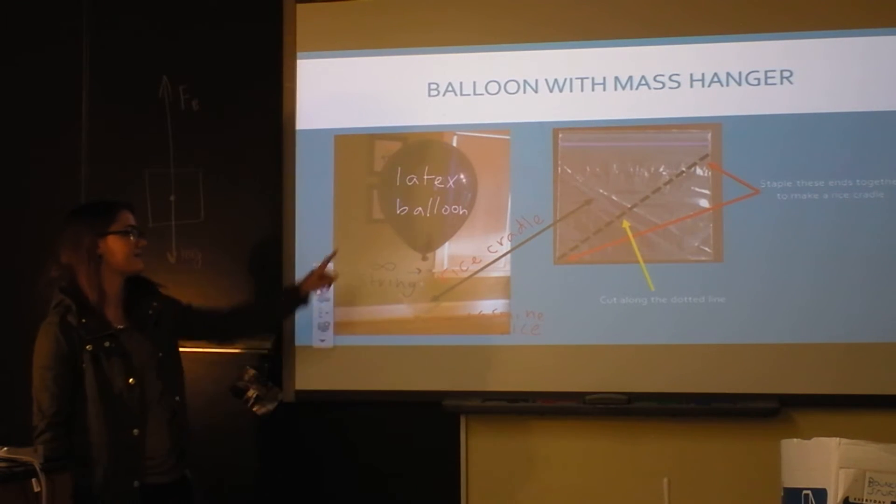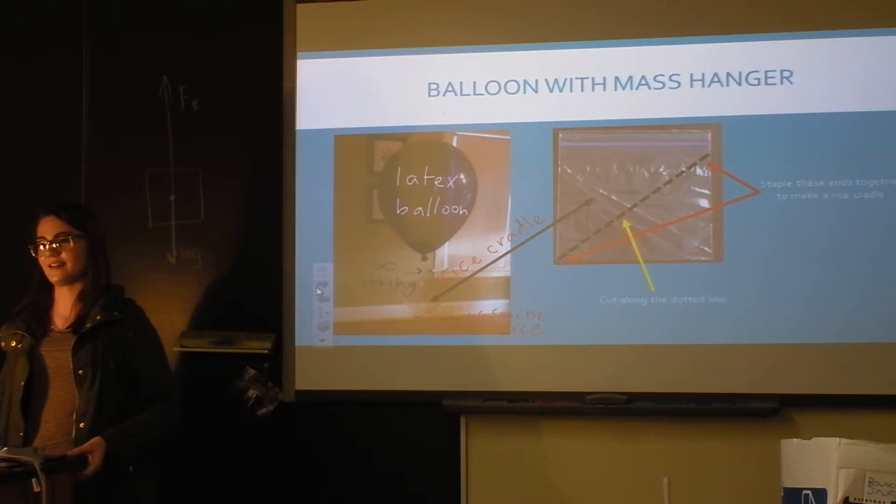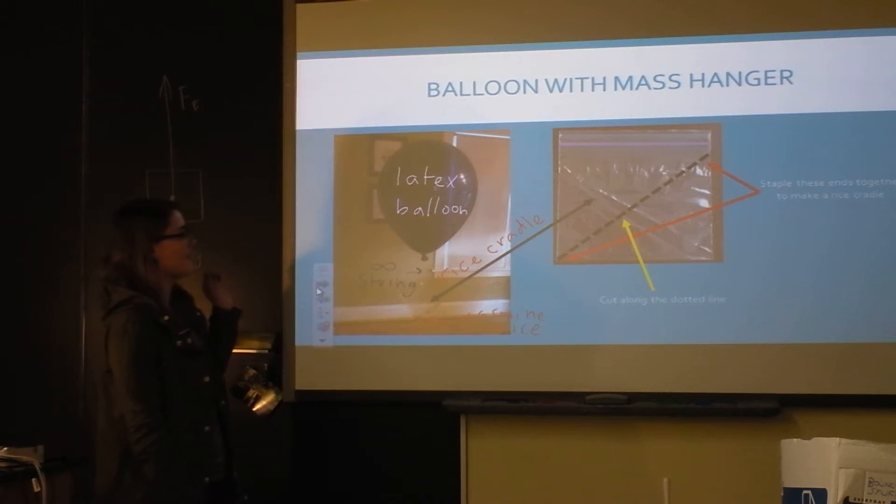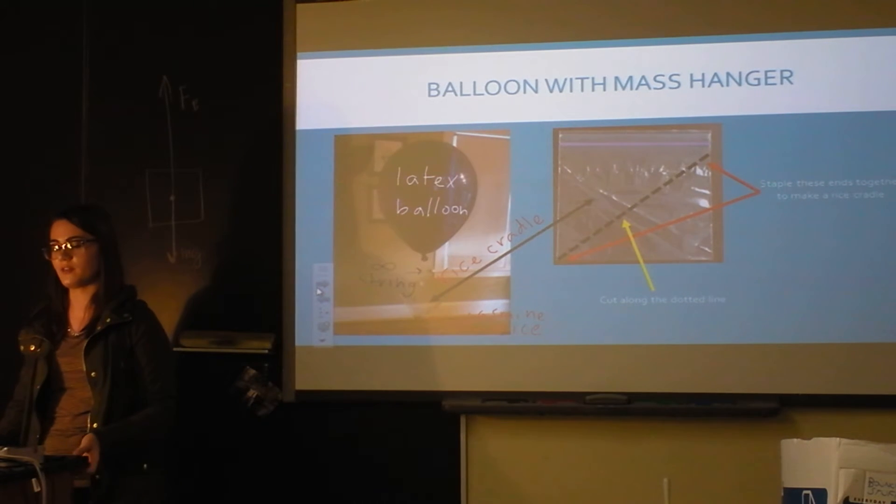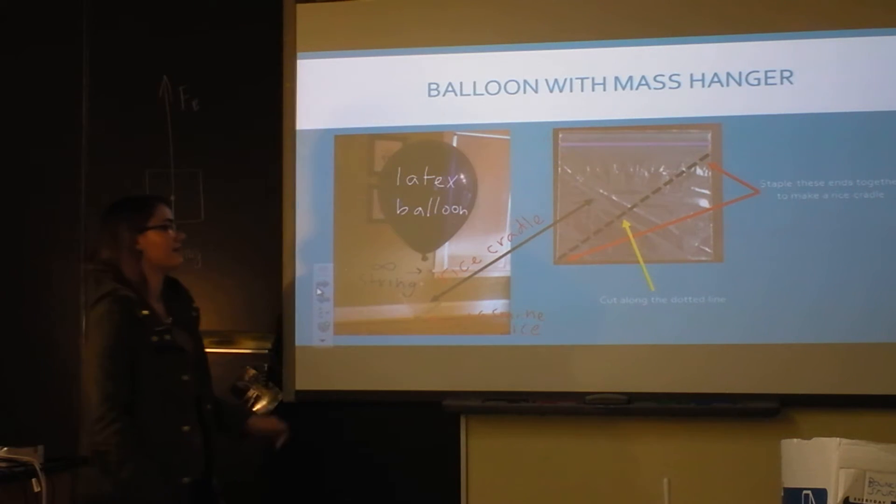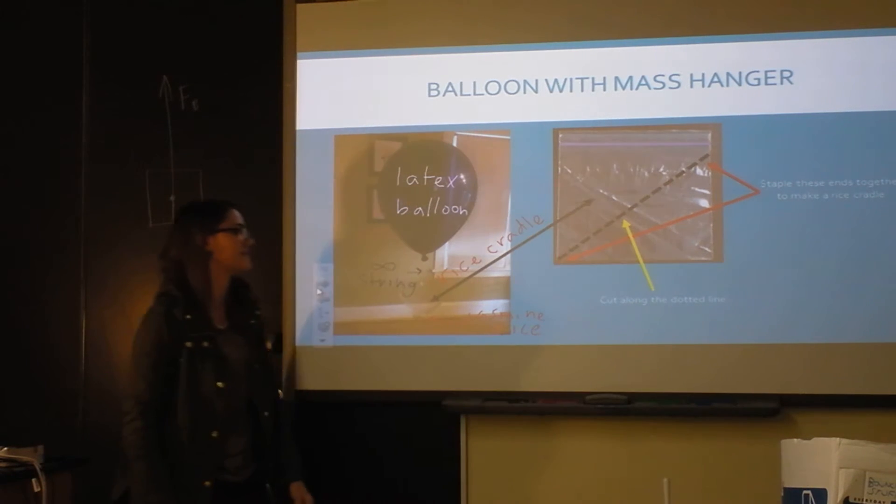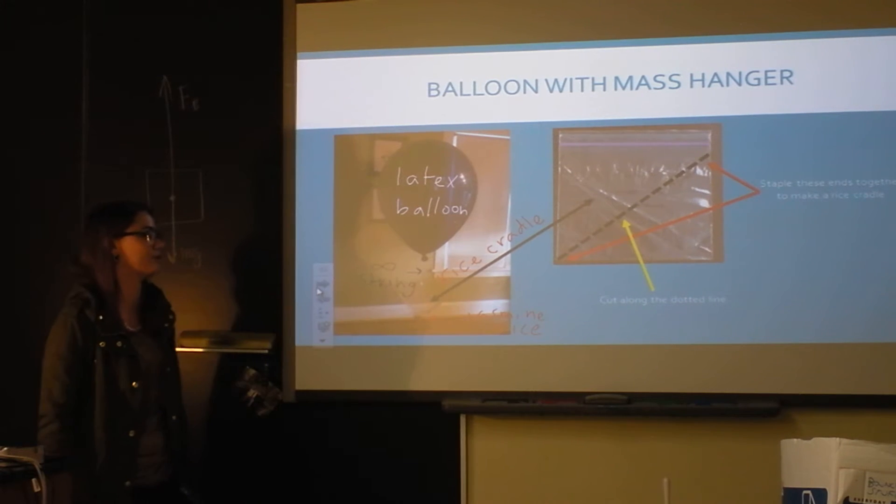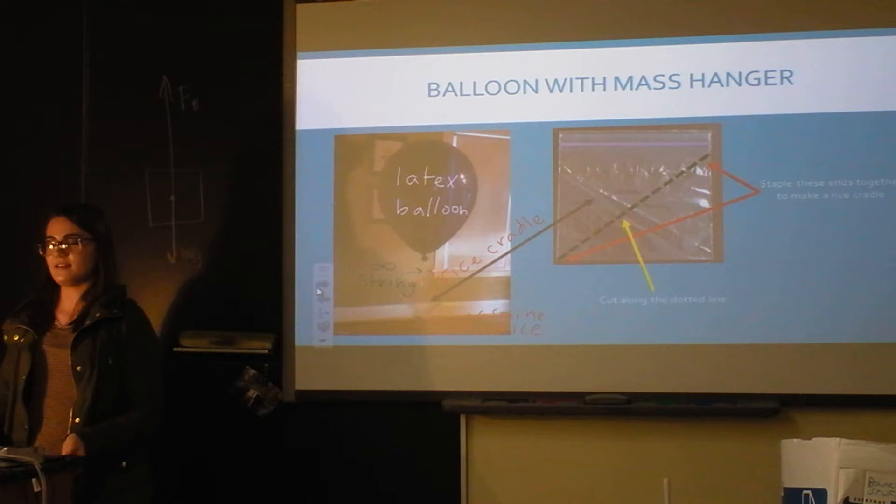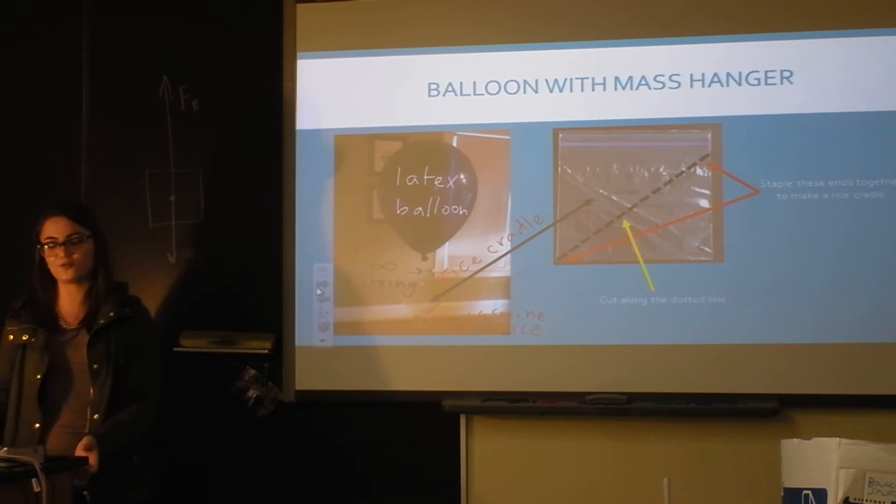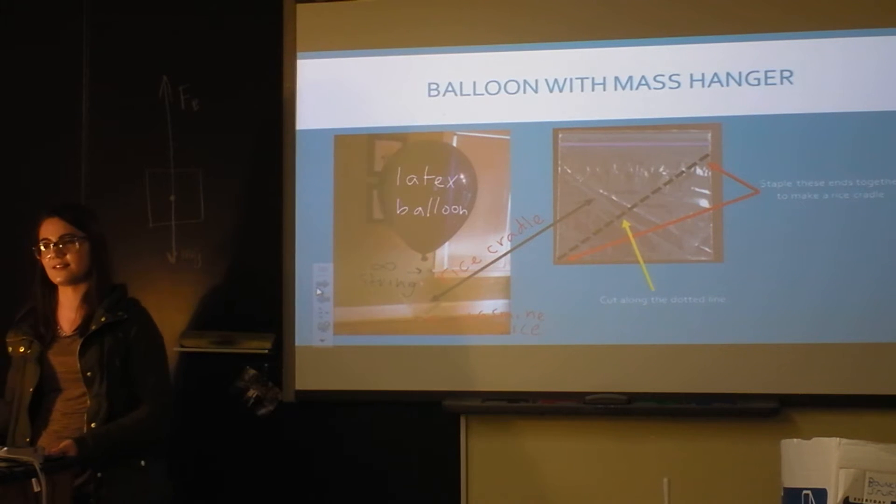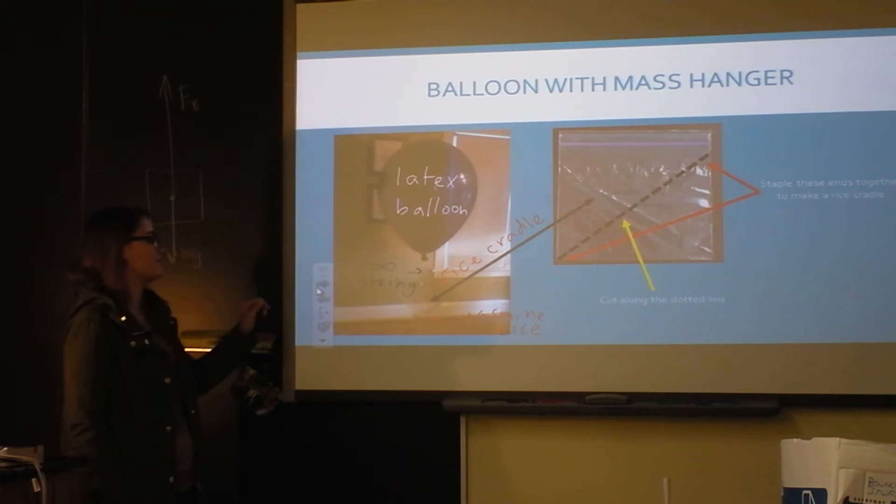This is my setup. This is actually a picture of the balloon in equilibrium when I got it there. I would have liked to show that here, but there's a latex allergy. I made this cradle that's supposed to be massless, but I took the mass of it so I could include that in the force of gravity. I took a sandwich bag, cut it, stapled it, and attached it to the string hanging from the balloon. There's no mass here that I could use that's small enough, so I used rice because it's fairly consistent and doesn't weigh a lot. And then I used a triple beam balance to weigh that.